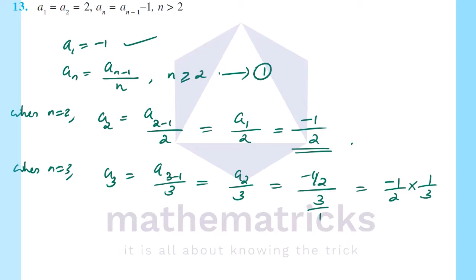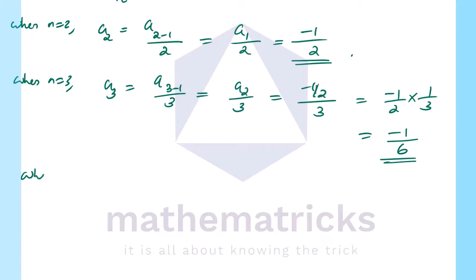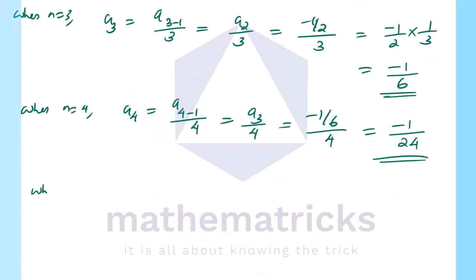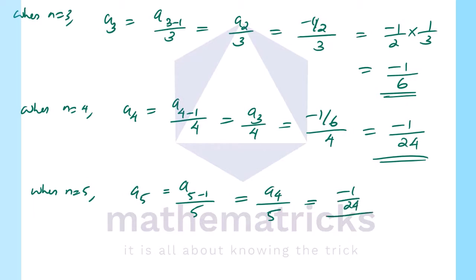Continuing question 12: a₄ = a₃ / 4 = (-1/6) / 4 = -1/24. Then a₅ = a₄ / 5 = (-1/24) / 5 = -1/120. That is the answer for a₅.